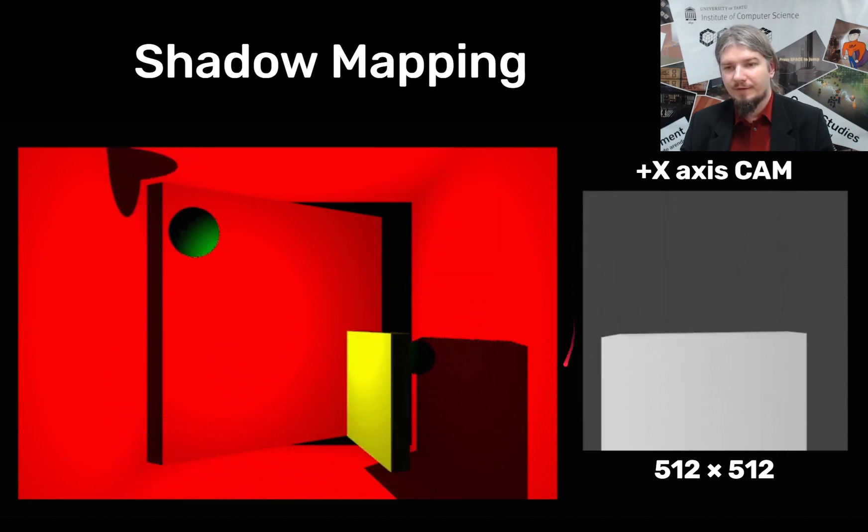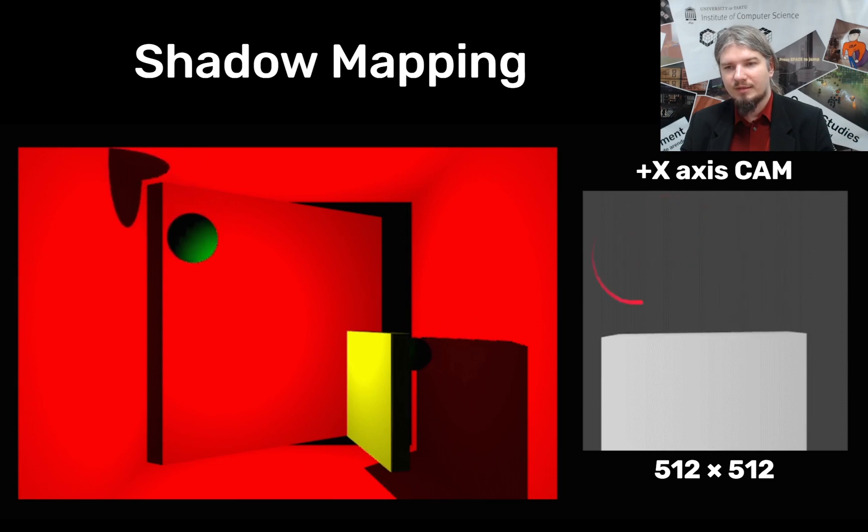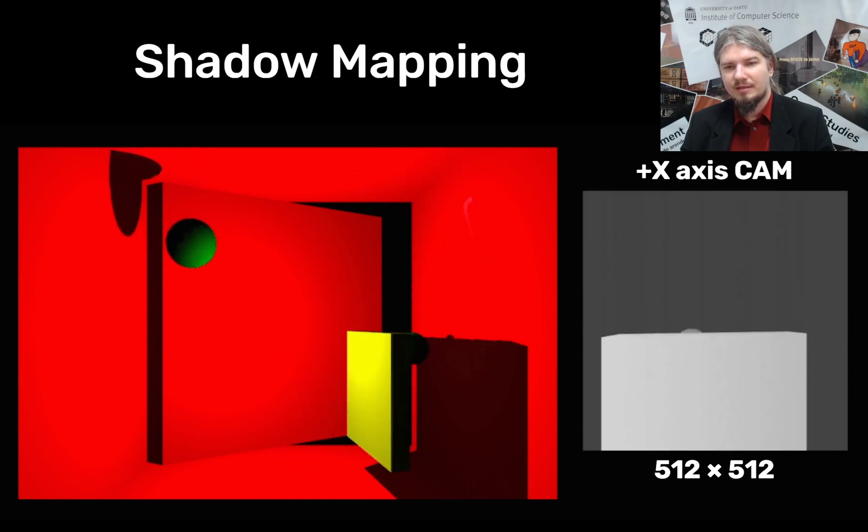But you can see that if this ball comes closer we get more nearby depth values on the shadow map and thus areas that are behind this sphere these are in shadow.